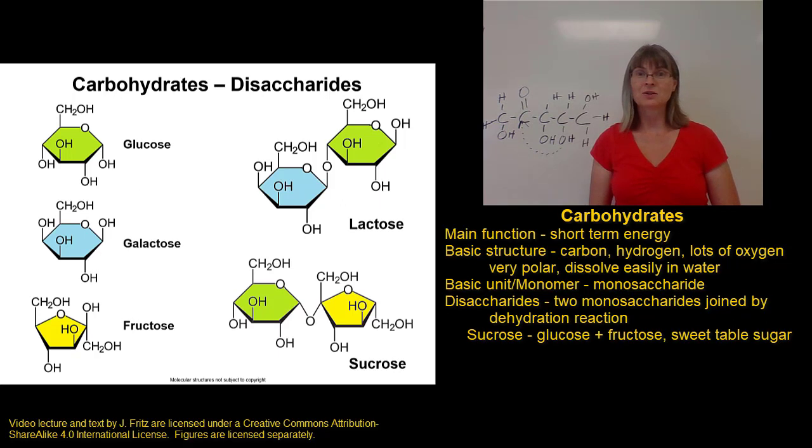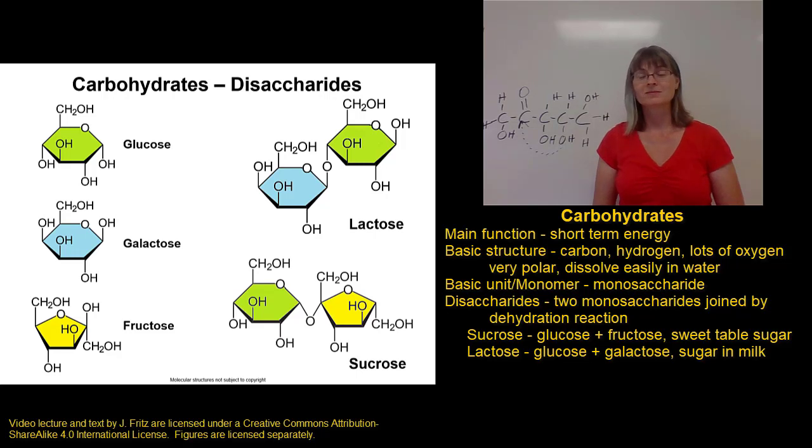There are two disaccharides that I want you to know about. The first one is sucrose. Sucrose is formed by a dehydration reaction between one glucose molecule and one fructose molecule. Because of the fructose, sucrose is a sweet sugar. Sucrose is what we refer to as plain sugar. Plain table sugar is actually sucrose. It's a disaccharide of glucose and fructose. The other sugar is lactose. Lactose is formed by a dehydration reaction between one glucose and one galactose. Lactose is the main sugar in milk.